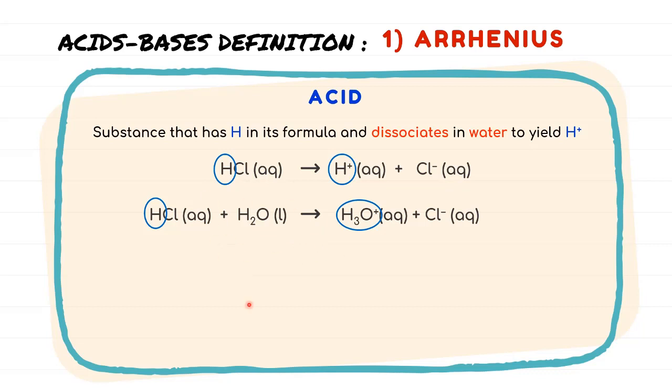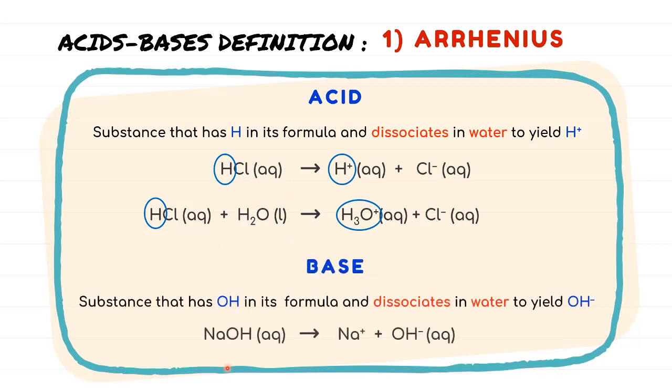While base is a substance that has OH in its formula and dissociates in water to yield OH-. For example, we have sodium hydroxide to dissociate into sodium ion and OH- ion, where the base is now characterized by OH-.